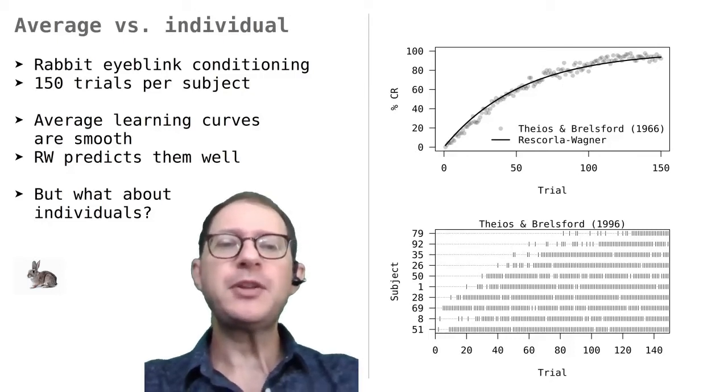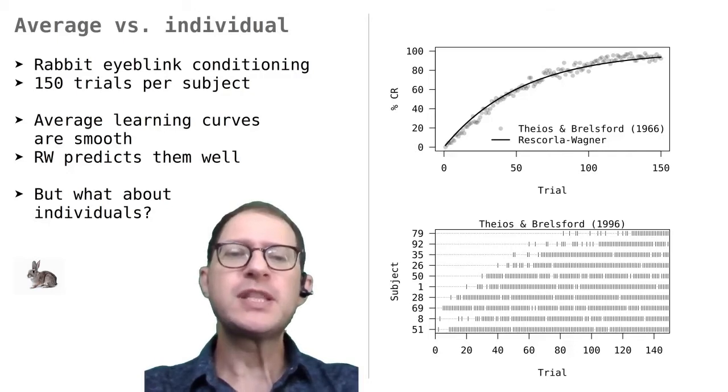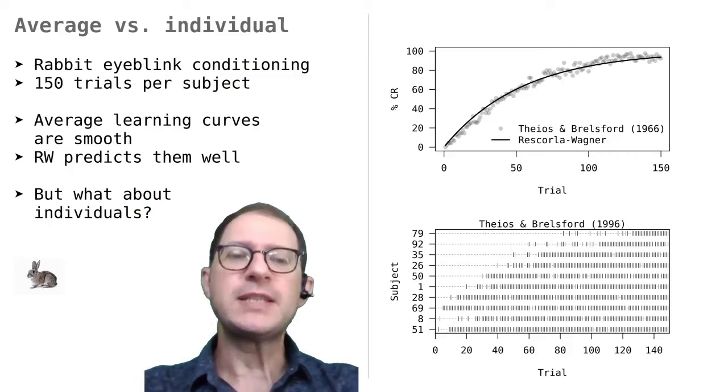It also seems that the learning phase is often short. Once a rabbit starts blinking to the CS, it quickly reaches a steady frequency of blinking. This looks different from the gradual increase in responding that we typically expect from RW. What I just said is not a proof that RW is not a good theory of learning, but it suggests that it can be improved.